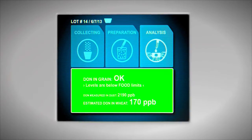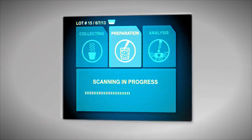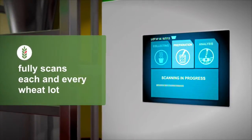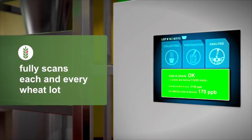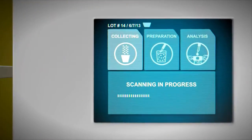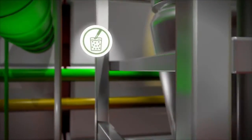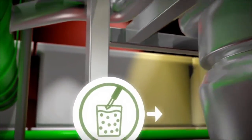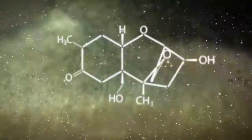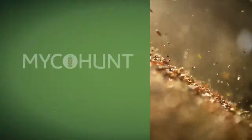Instead of estimates based on a limited number of randomly taken incremental samples, MicaHunt fully scans each and every wheat lot for contaminants in its entirety, guaranteeing a 90% bulk transparency. Data will be continuously available with only a single one-time investment. As an easy to use, environmentally friendly tool, MicaHunt will give reliable and truly representative immediate on-site test results and provide a significant competitive advantage for growers and traders.